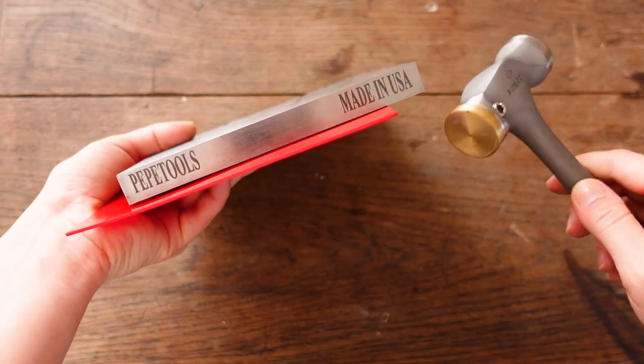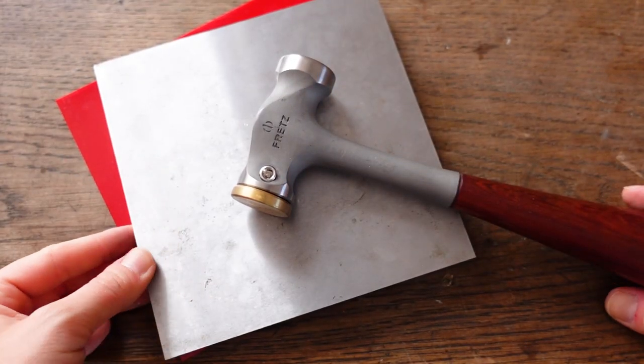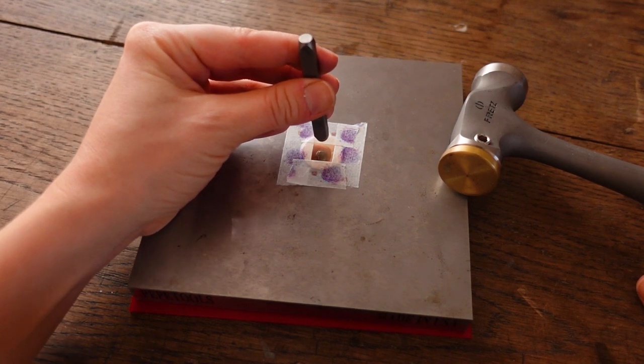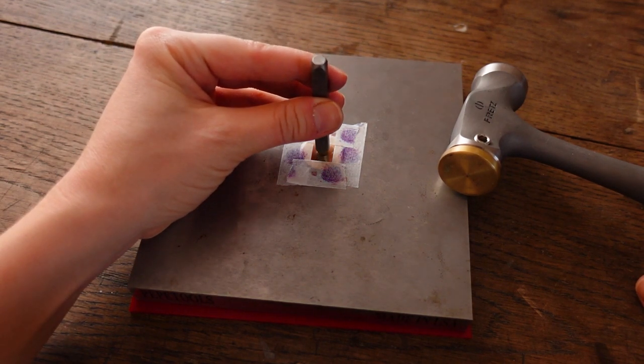I will be using Pepe Tool stamping block and the fret stamping hammer. I fixed the disc onto the stamping block with the washi tape so it doesn't move while stamping.